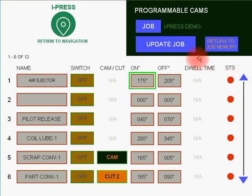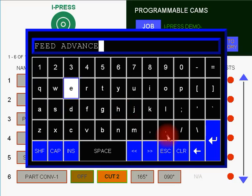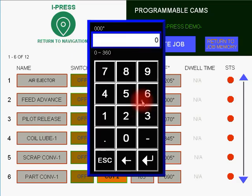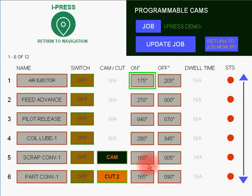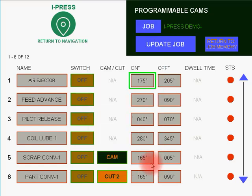What we're going to show you here, without bothering to program a job right now, is — in the case of cam 2 — we're going to name that Feed Advance, and that is where you would wire into your feeder. Normally you would want to be feeding your coil material in somewhere between 270 degrees, completed by 90 degrees. So you would enter 270 degrees for your cam on for Feed Advance, and feed to be complete by 90 degrees or whatever you need.